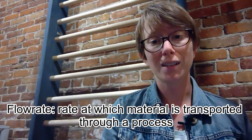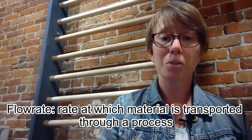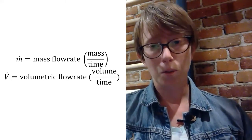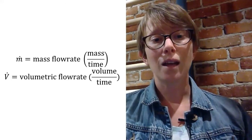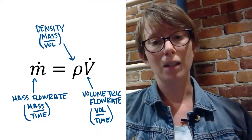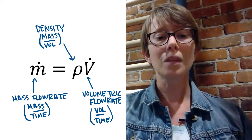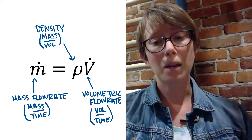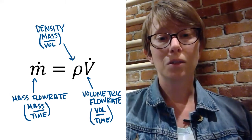First, I want to talk about flow rate — this is the rate at which a material is transported through a process. You have mass and volumetric flow rates. Mass flow rates have a dimension of mass per unit time, which you can also write as M with a dot over it. Volumetric flow rates have a dimension of volume per unit time, written as V-dot. You can use the density of a fluid to convert between M-dot and V-dot. For example, M-dot equals rho (density) times V-dot. You could think of M-dot as having units like kilograms per second, density in kilograms per liter, and V-dot in liters per second.